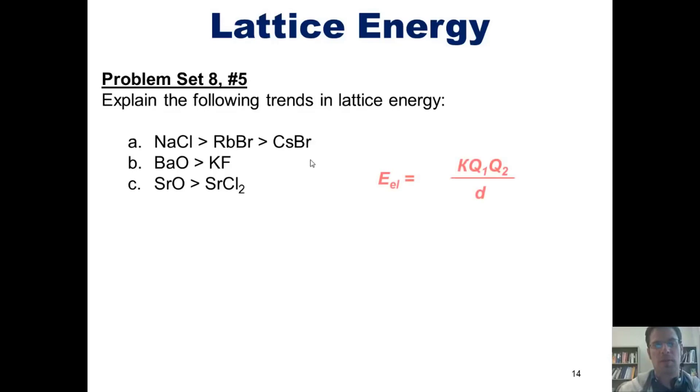In order to answer that, we should remember the equation from the previous slide, that once again as we increase charges or decrease the bonding distance, lattice energy goes up. You'll notice that for the examples in part A, every single cation has a plus 1 charge and every single anion has a minus 1 charge. So there's no difference in their charges from one to the next. Thus, their charges can't be contributing to the differing trend in lattice energy. So what is it then? It must be the bonding distance.